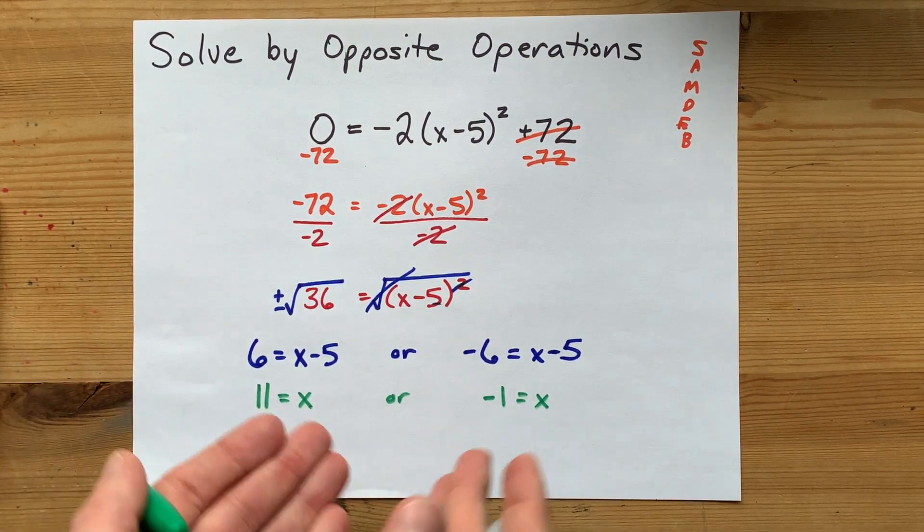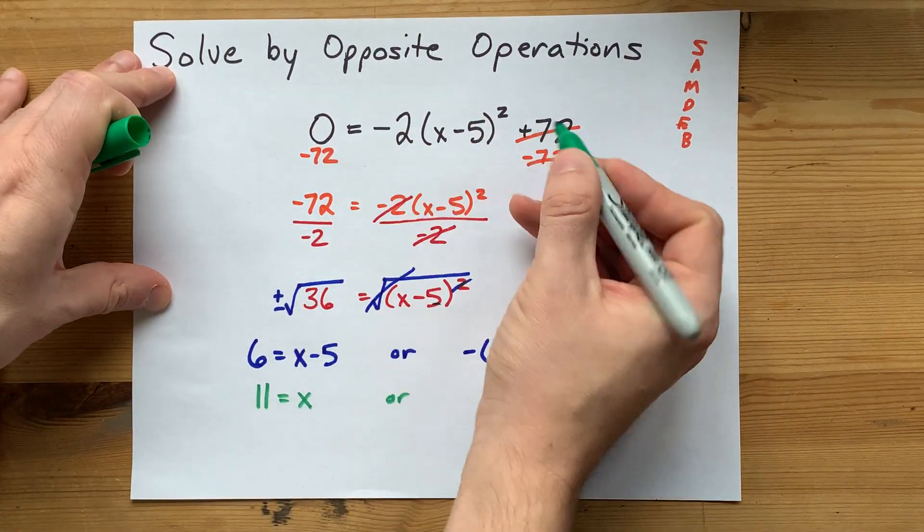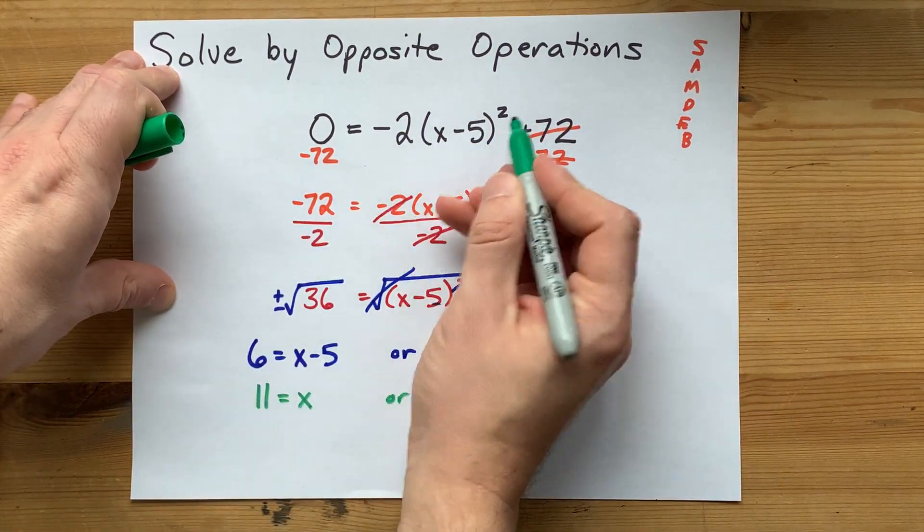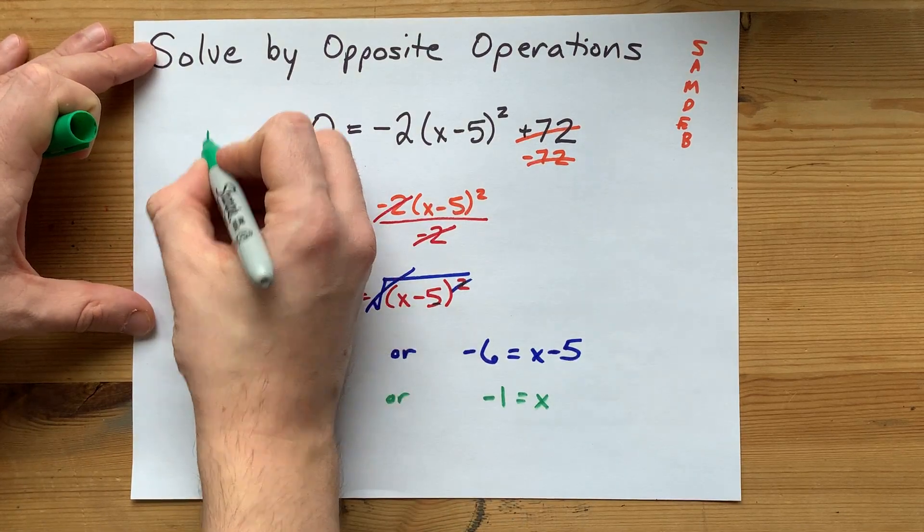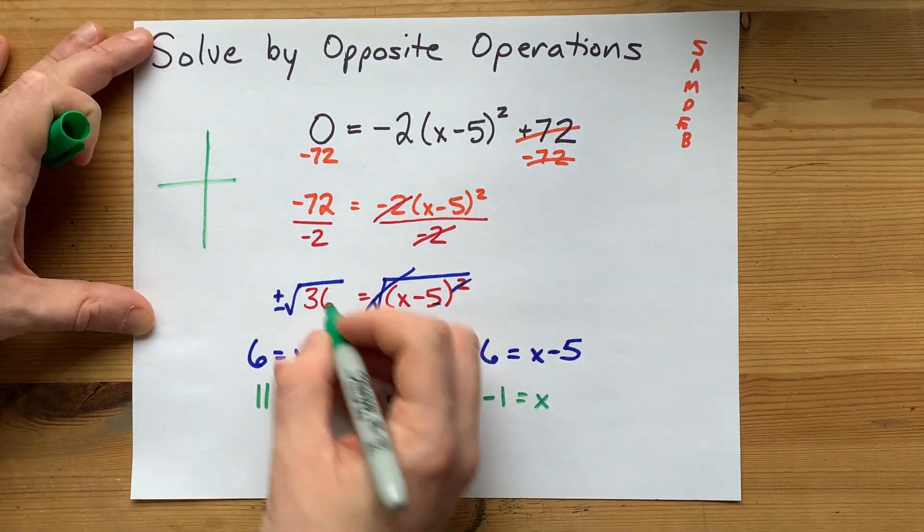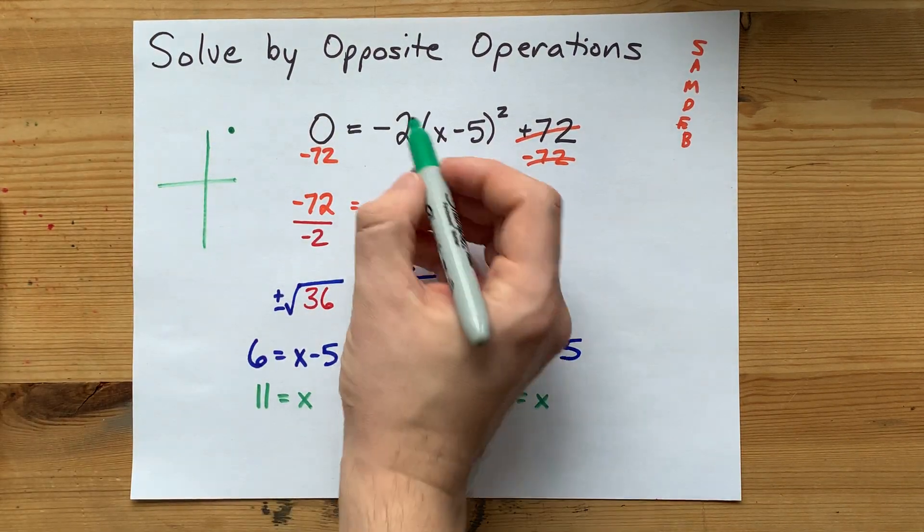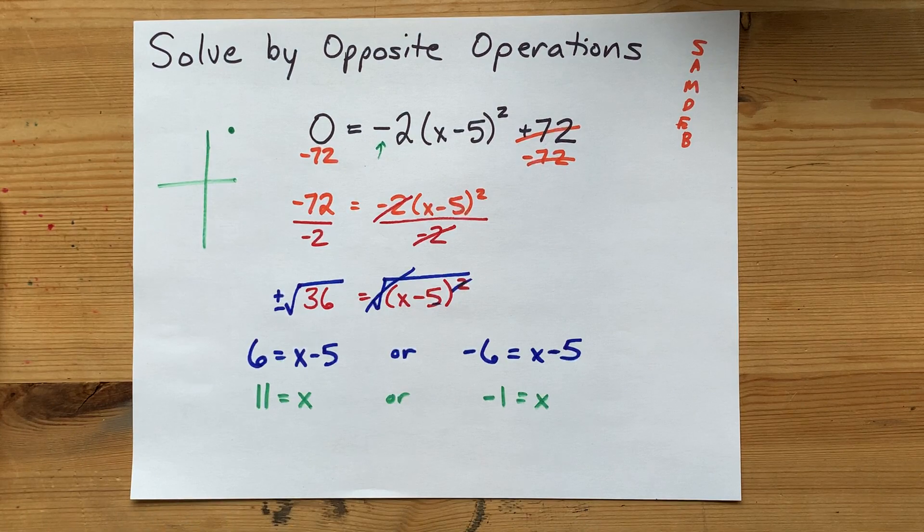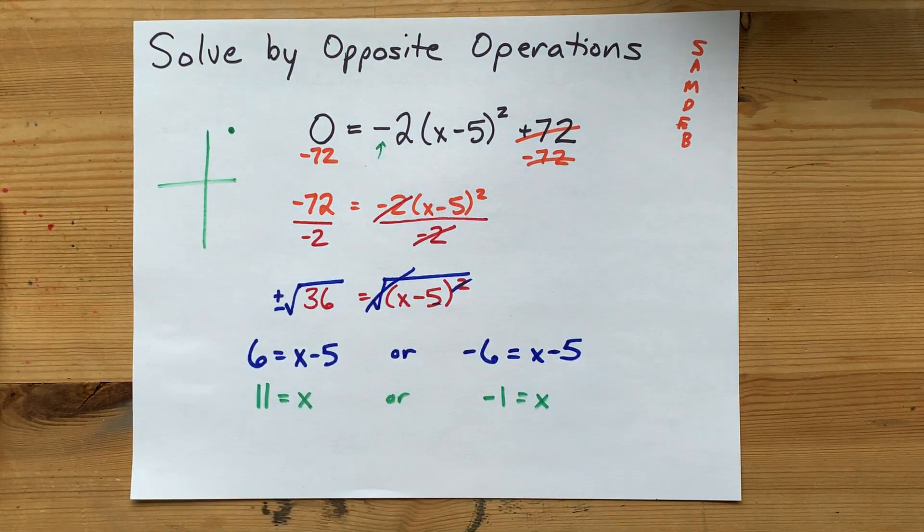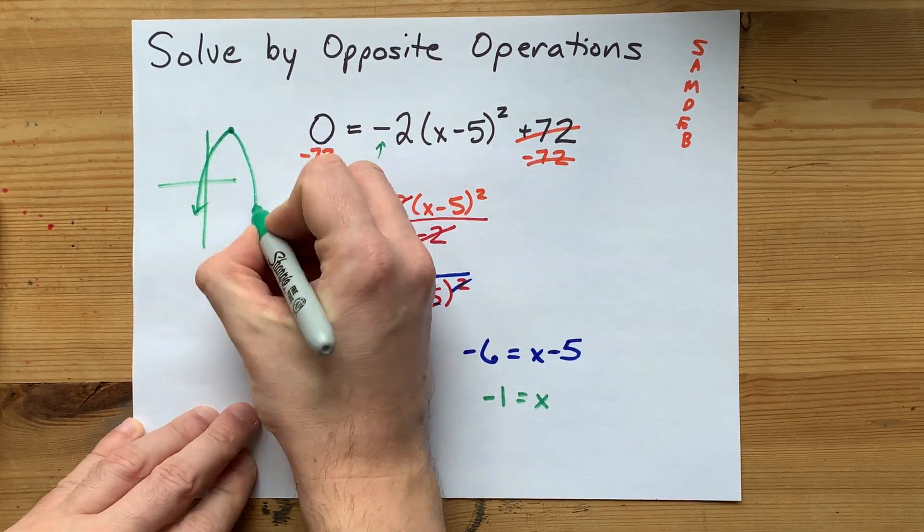Now if you're wondering how it's possible to get two possible solutions, well, this is clearly a parabola. Surely you've learned that x squared is a parabola, and the vertex of this is at positive 5 comma positive 72, which is somewhere way up here. This parabola also opens down. You know that because a is negative, and that means it comes down like this.